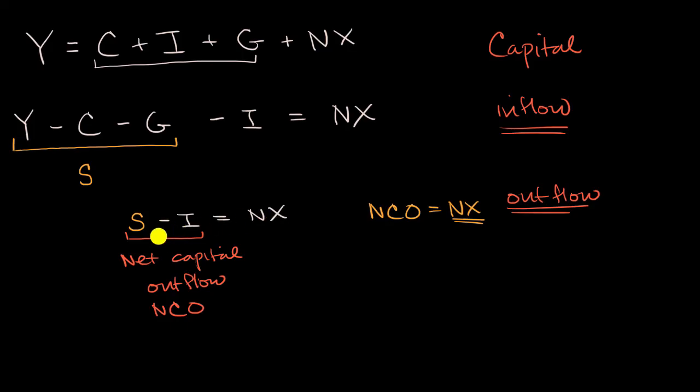Now another way to think about this is we could rearrange this equation where if we subtract net exports from both sides and then add investment to both sides, we could get national savings minus net exports is equal to investment. Now if net exports is equal to net capital outflows, what would be the negative of net exports be? Well this would be net capital inflows.